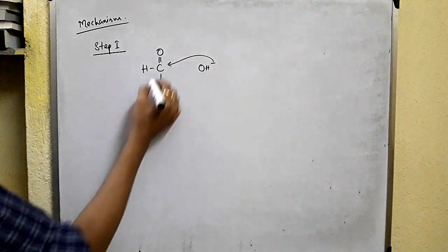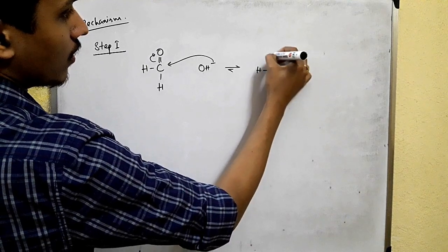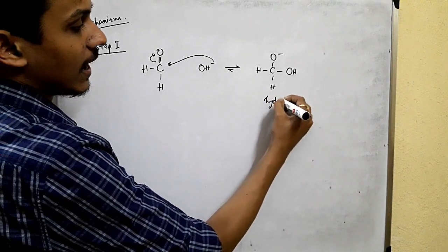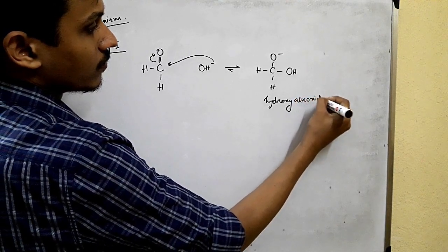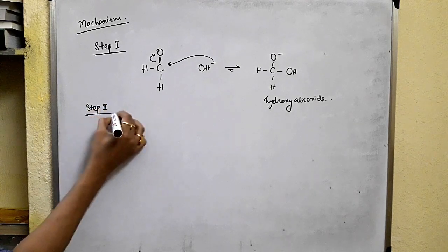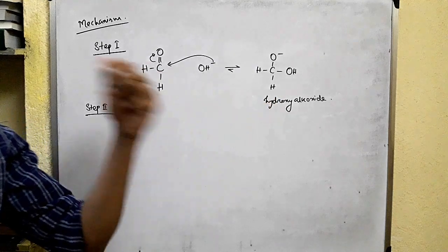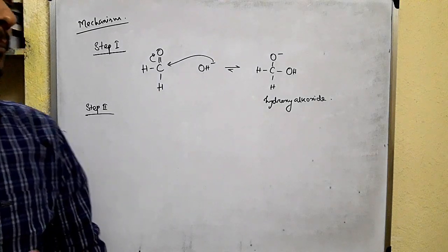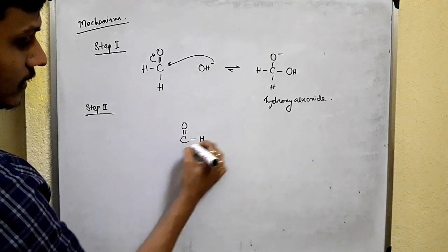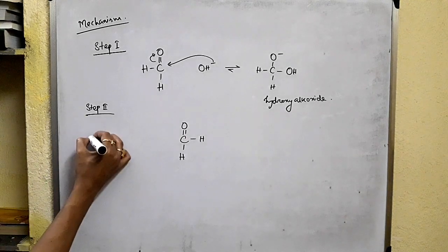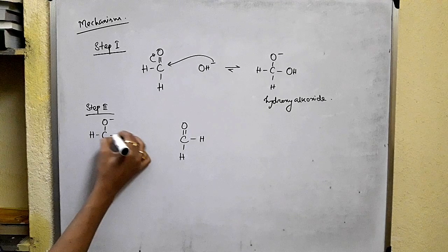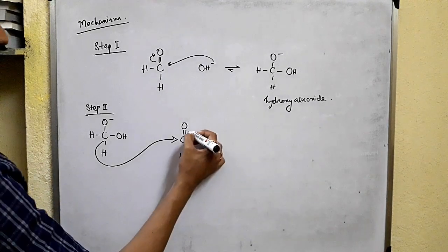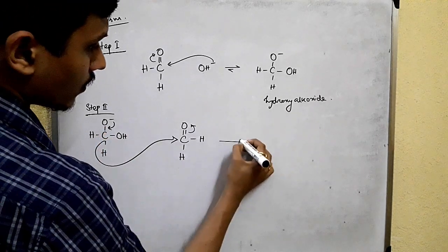The OH⁻ attacks the carbonyl, and an anion is formed — this is known as hydroxy alkoxide. In step two, this hydroxy alkoxide behaves as the hydride ion donor. Hydride is very unstable to be released in solution, but if there is a suitable electrophile — that is, the second molecule of the aldehyde — then hydride is transferred to the electrophilic center of the second molecule, and this negative charge drops.